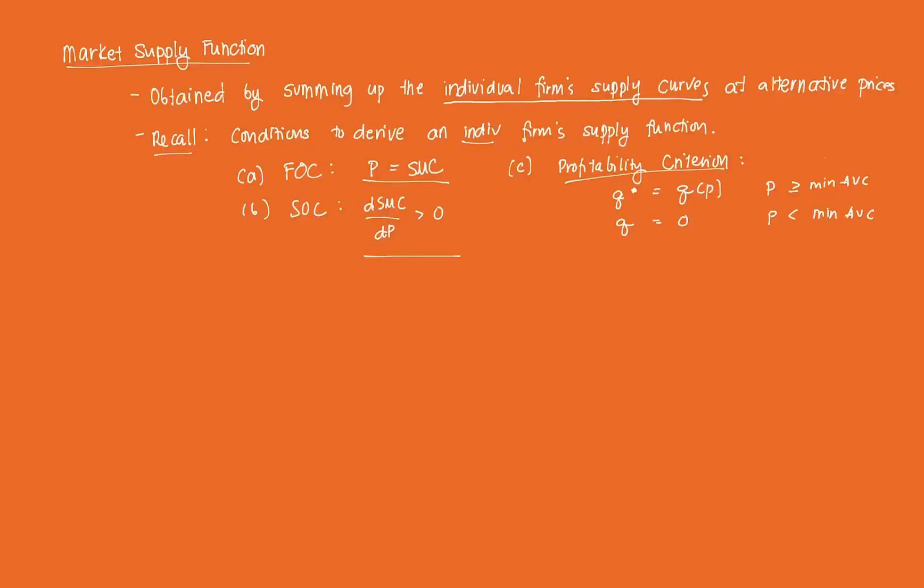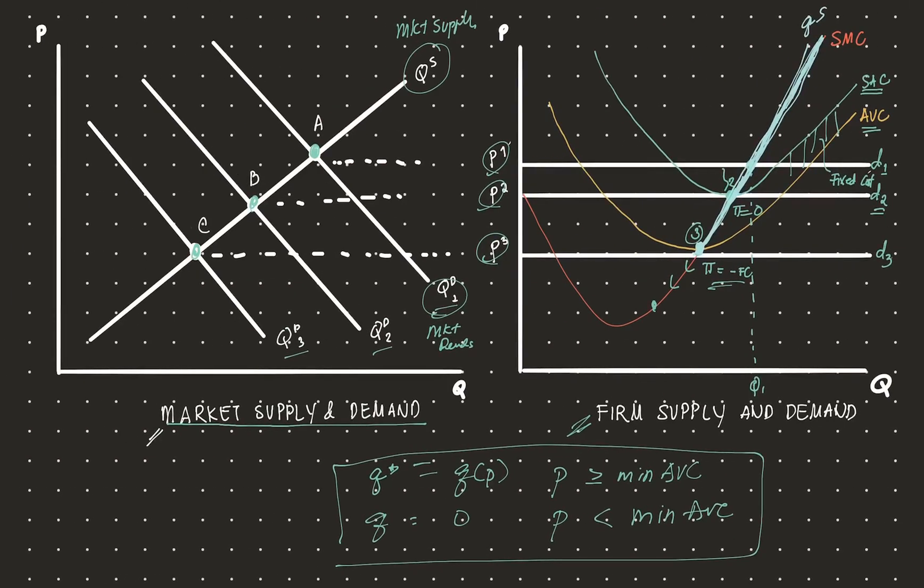Now, let's recall that a bit graphically. In the last video, we showed this figure and we said that the firm's supply curve is given here. This is the individual supply curve, that's QS. The first order condition states that P is equal to SMC, meaning at any point here, that is equal to P.